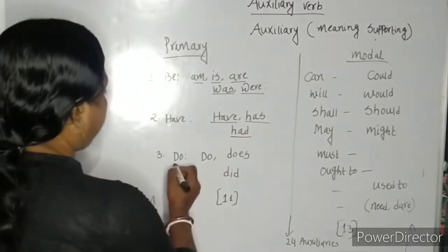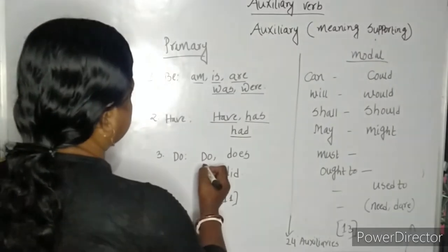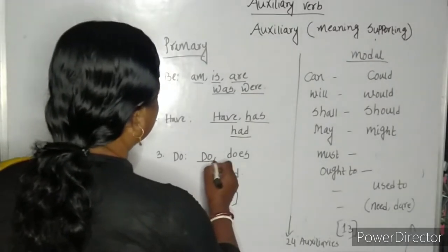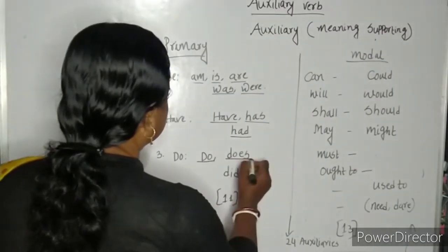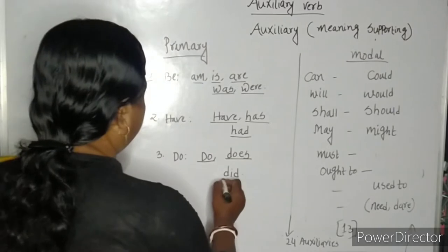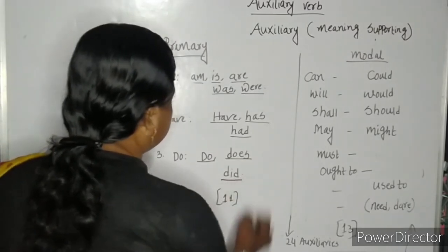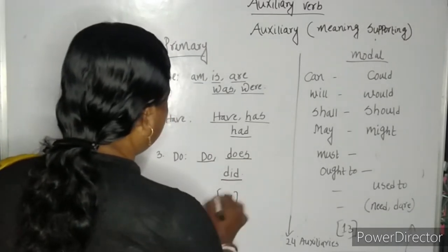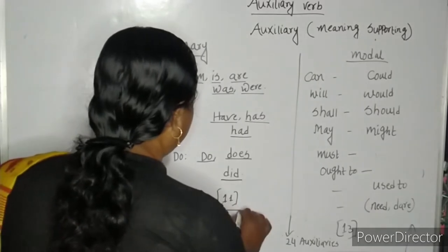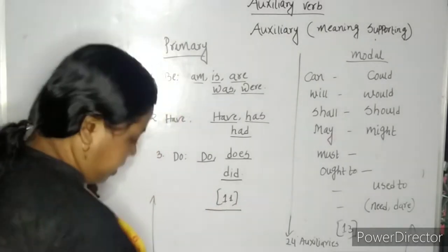The verb do has two forms in present tense: do and does, and one form in past tense: did. So there are overall 11 primary auxiliaries.